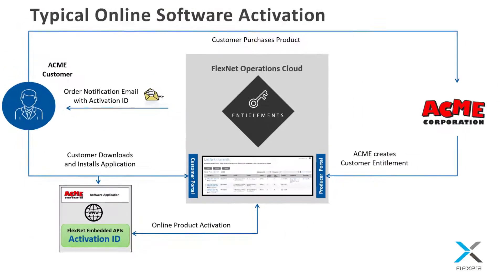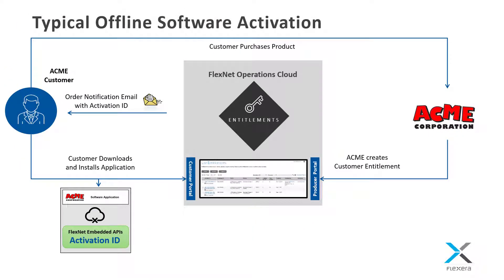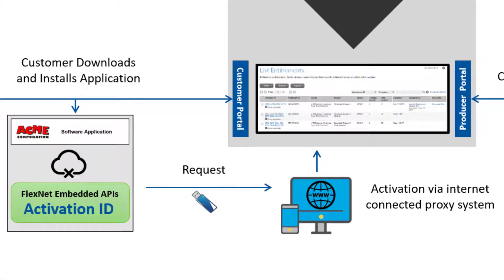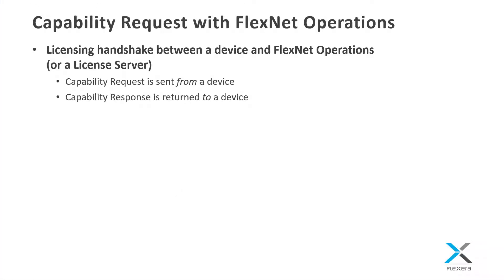Once stored, the application can then acquire the license features and provide the necessary functionality. If the target device is offline, a license request file containing the activation ID and system information can be generated from the device and uploaded to the FlexNet Operations customer portal by the customer on a system which has internet access. A license response can then be downloaded from the portal and loaded onto the offline device.